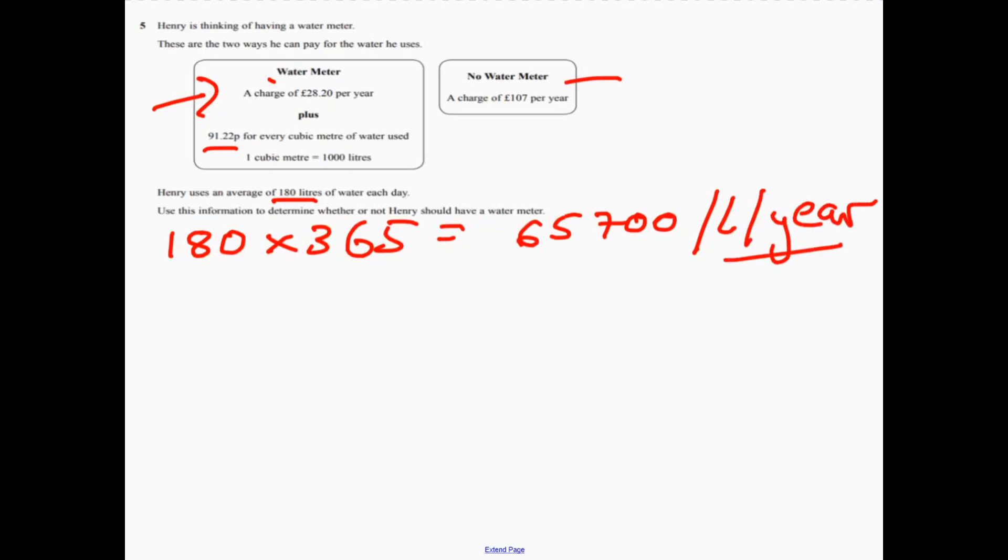Now we need to think how many cubic metres that's going to be. So 65,700 litres. And then if we divide that by a thousand, that will tell us because one cubic metre is a thousand litres. So if we divide that by a thousand, that tells me how many cubic metres we got. So that's 65.7. So that's cubic metres.